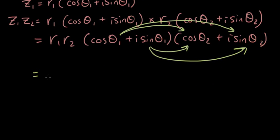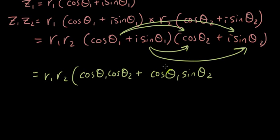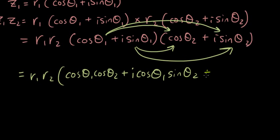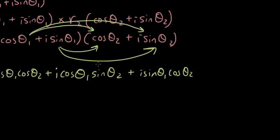So then I will get r1 r2 bracket. I'm going to go cos θ1 times cos θ2 plus cos θ1 times sin θ2, so i sin θ2, plus i sin θ1 times cos θ2. And then the last one I have i sin θ1, so i squared sin θ1 sin θ2.